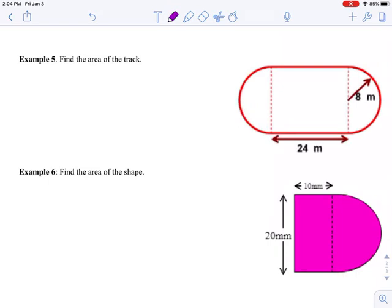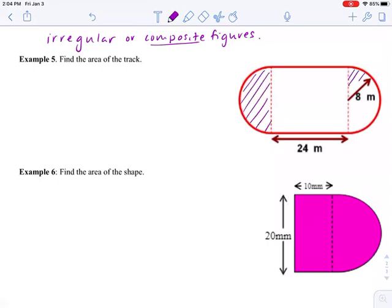All right, moving right along. You can turn the paper over. Now we're going to find the area of irregular figures. I'll call these composite figures because they are—this first one is a combination of two semi-circles plus a rectangle.